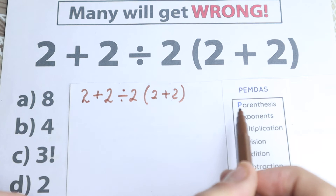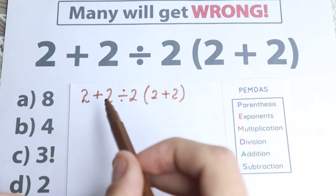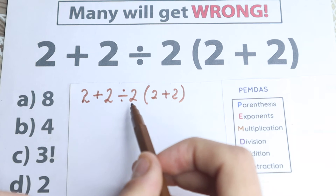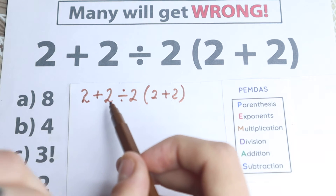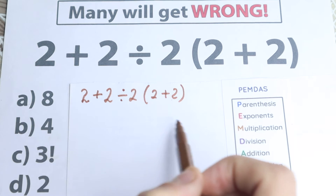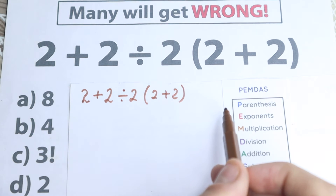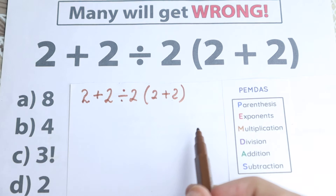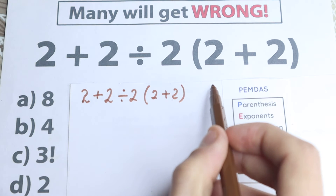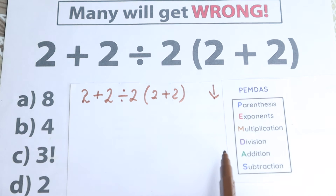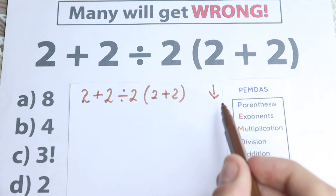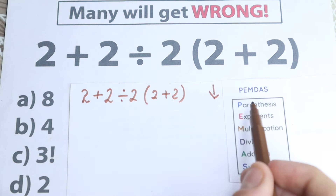Because if you don't know about PEMDAS, you could easily start with addition, then division, then multiplication — basically in a chaotic left-to-right order. But with the correct order of operations, let's solve this properly. PEMDAS works from the top to the bottom and we go step by step. The first step according to PEMDAS is parentheses.